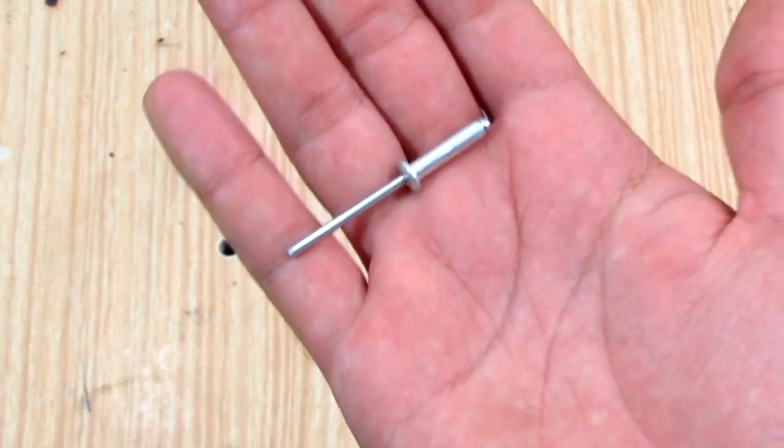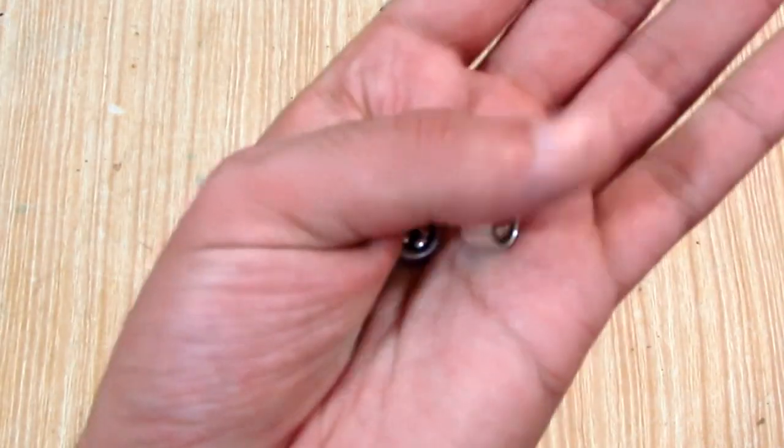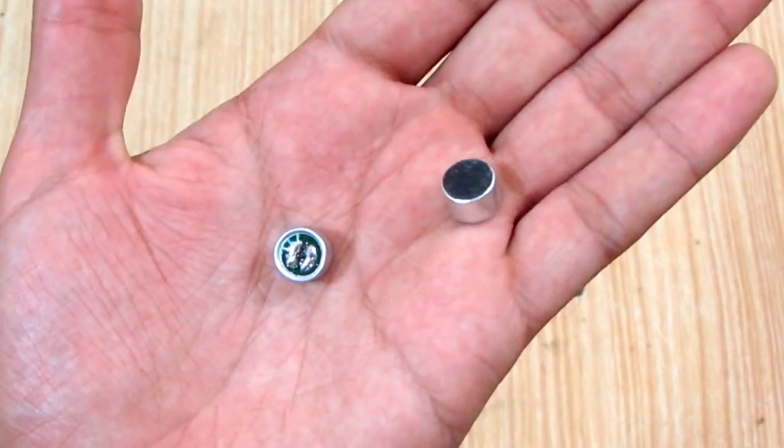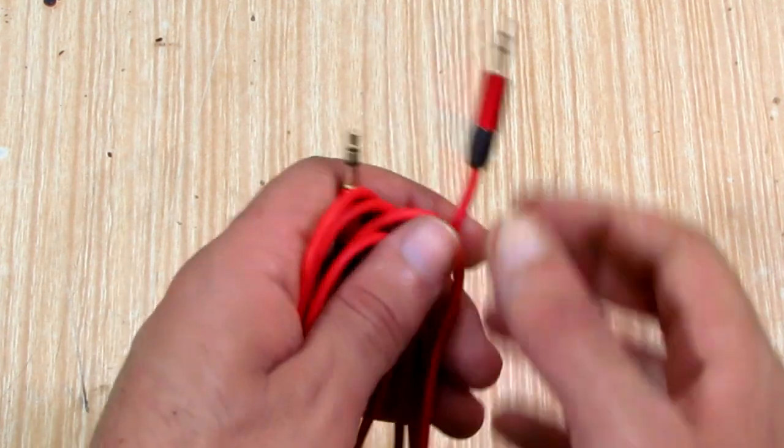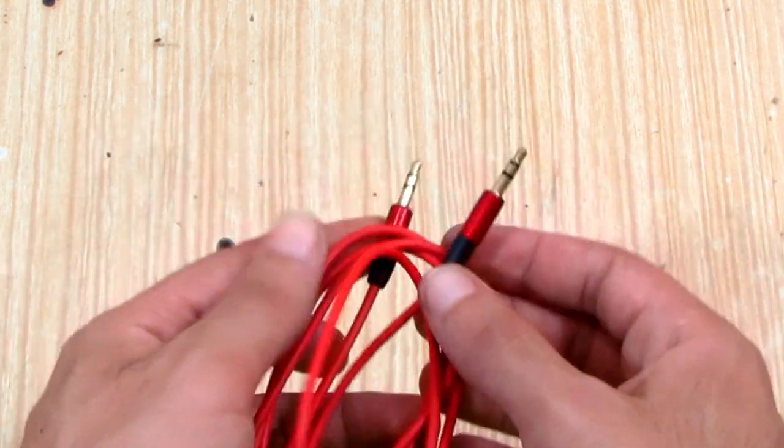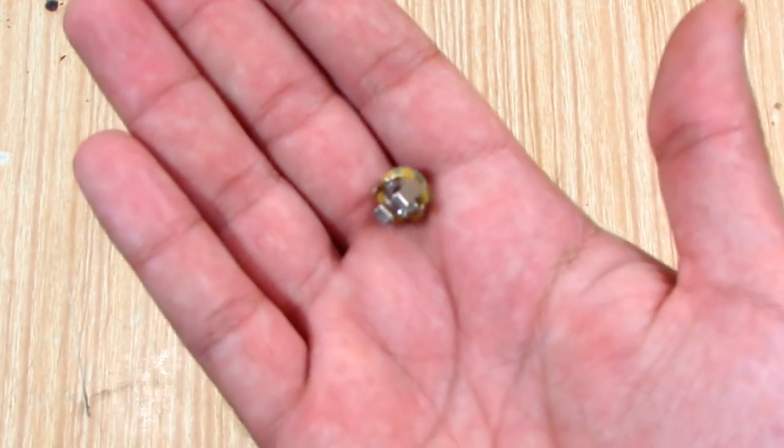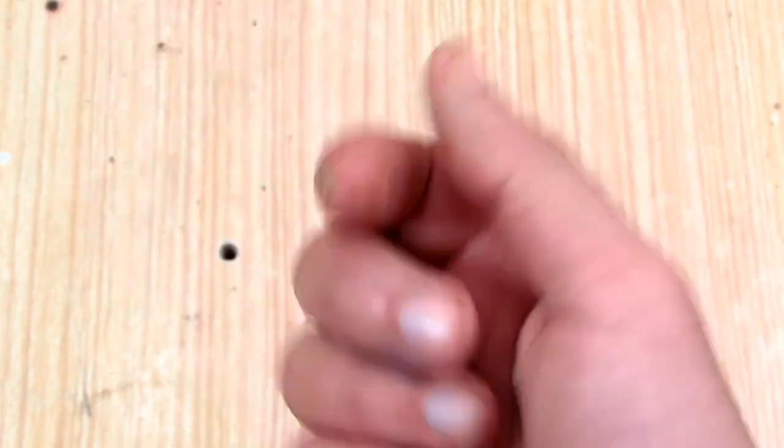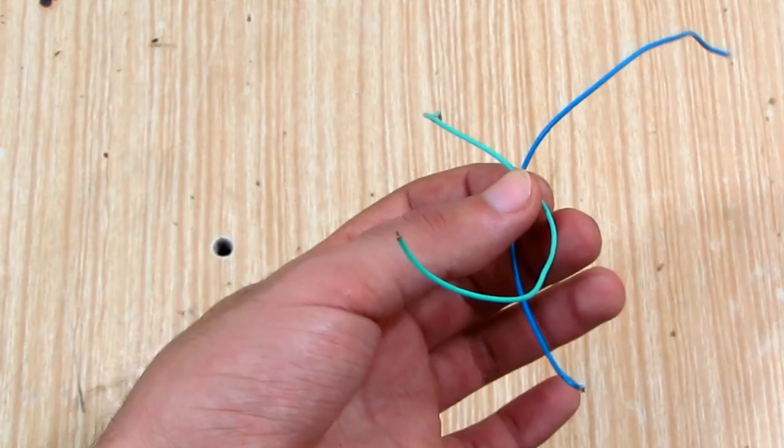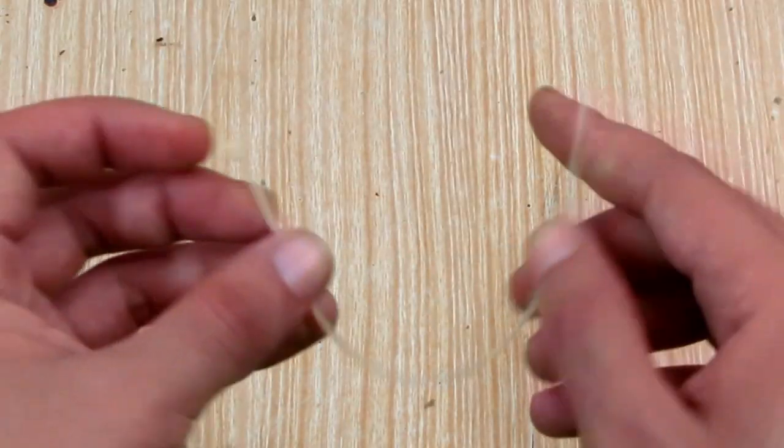We'll also need a 4mm rivet, two electret microphones, male to male stereo cable, 3.5mm female jack, some thin wire, and a zip tie.